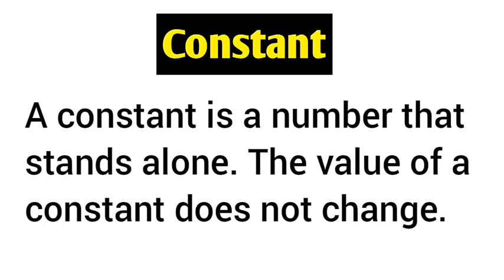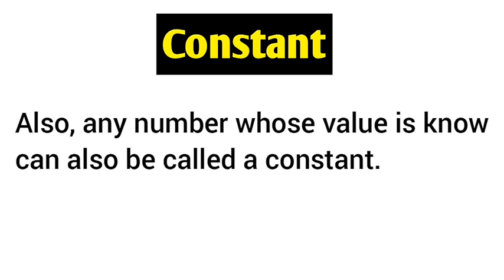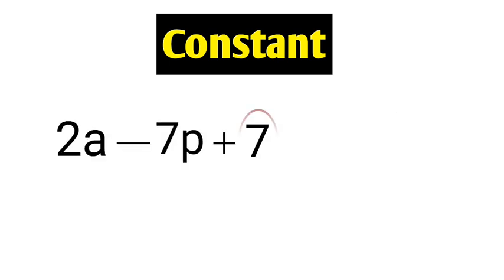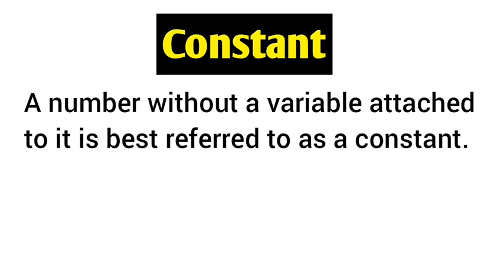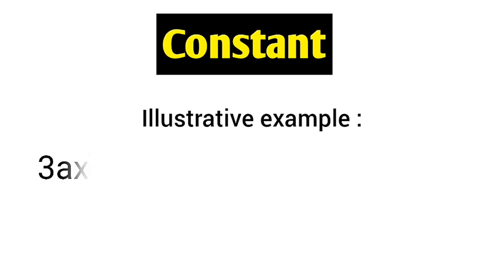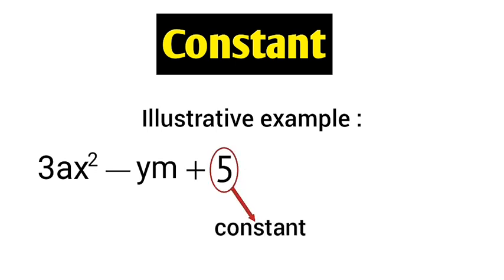Now let's look at the terminology constant. A constant is a number that stands alone and whose value does not change. Any number whose value is known can also be called a constant. A constant stays the same and does not have any variable attached to it. In the expression 3ax squared minus ym plus 5, the constant is clearly 5, since that number stands alone without any variable attached to it.